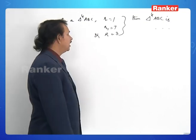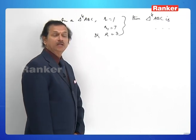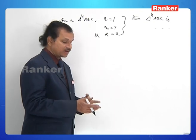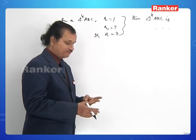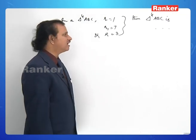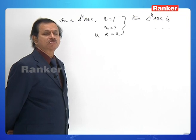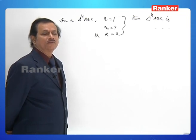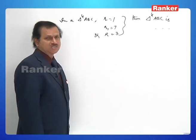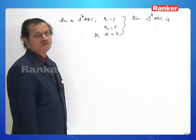Next question: in triangle ABC, r = 1, r₁ = 7, R = 3. Options: isosceles, equilateral, right-angled, or none. Using the formula r₁ − r = 4R · sin²(A/2): sin²(A/2) = (r₁ − r)/(4R) = 6/12 = 1/2.